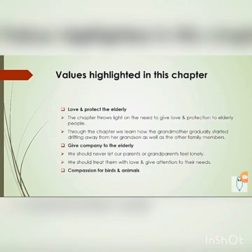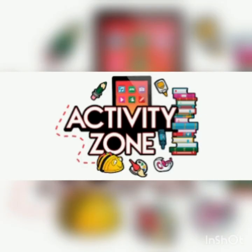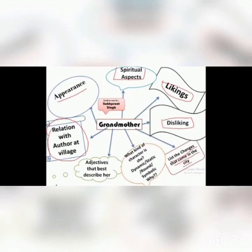Here are a few points highlighting the values in this chapter — please pause the video and go through them. Now it's time for your activity. Have you ever experienced your grandmother's care and affection? Have you ever admired her appearance? Start preparing an autobiography of your grandmother using the given rubric. If possible, paste her picture. This will be your post-activity based on this lesson. Do this and pin it in your activity zone. Thank you.